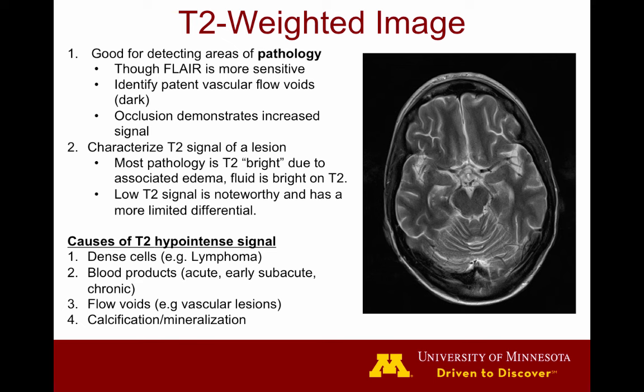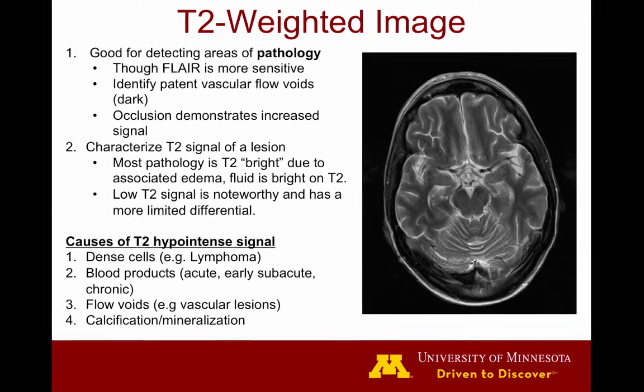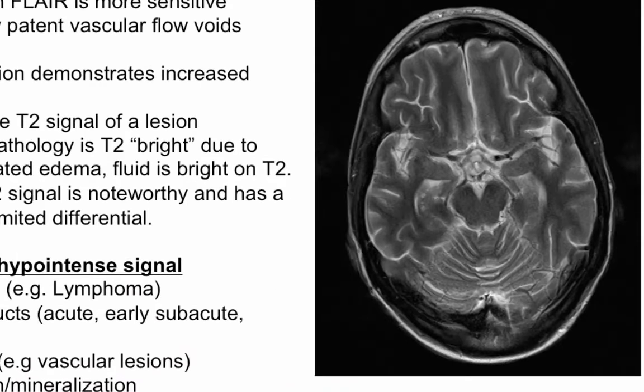Here we have another T2-weighted image slightly lower in the head. Recall that T2-weighted images being more sensitive to fluid will show edematous pathology as bright, a little more easily seen than on T1-weighted images. I want you to take note of the flow voids that you'll see here in the left middle cerebral artery, distal internal carotid arteries, and even the right posterior communicating artery.